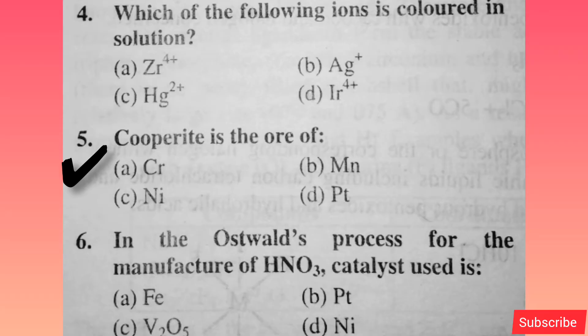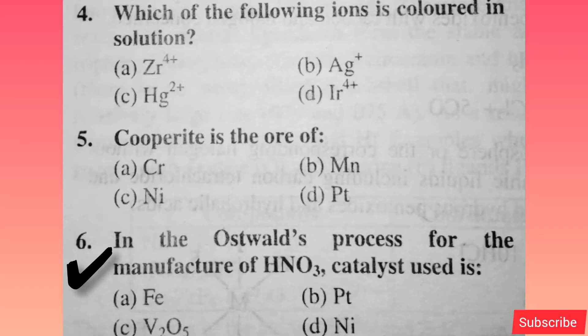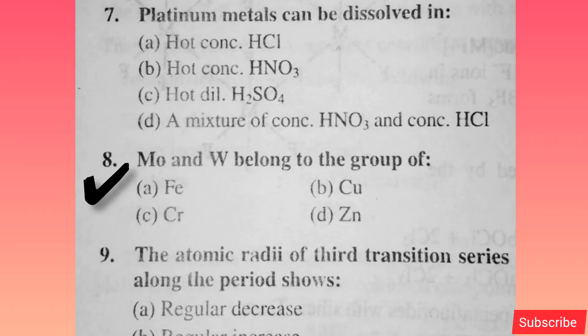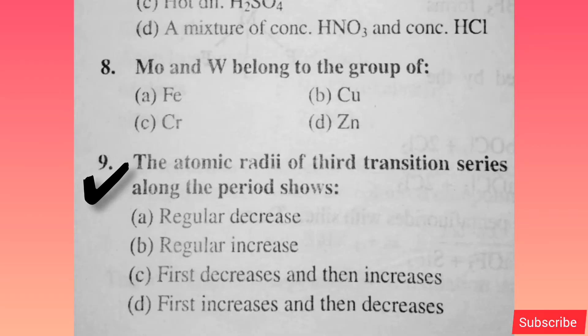Copperite is an ore of — option D is correct. In the Ostwald's process for the manufacture of HNO3, the catalyst used is — option B is right. Platinum metal can be dissolved in — option D is right. Mo and W belong to the group of — option C is right. The atomic radii of the third transition series along the period — option D is correct.